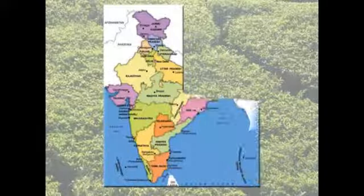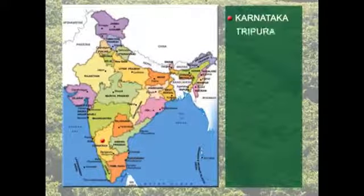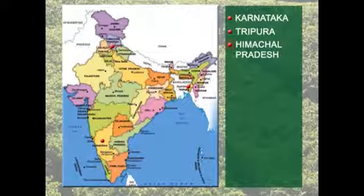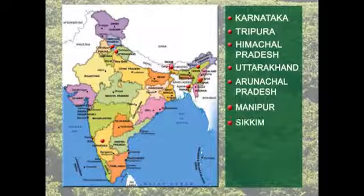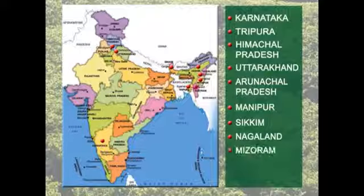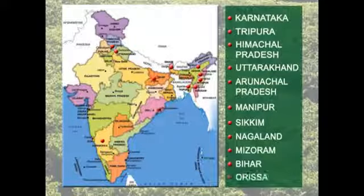Other areas where tea is grown to a small extent are Karnataka, Tripura, Himachal Pradesh, Uttarakhand, Arunachal Pradesh, Manipur, Sikkim, Nagaland, Mizoram, Bihar, and Odisha.